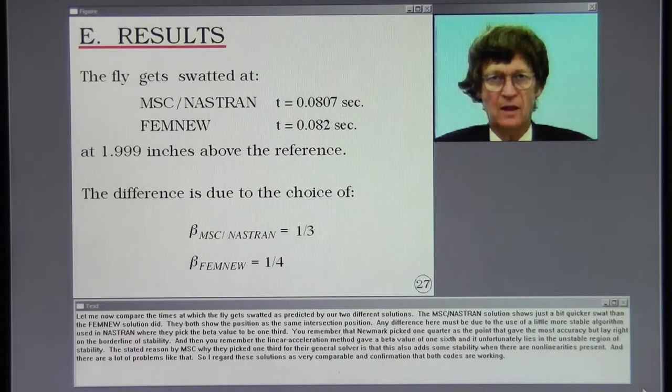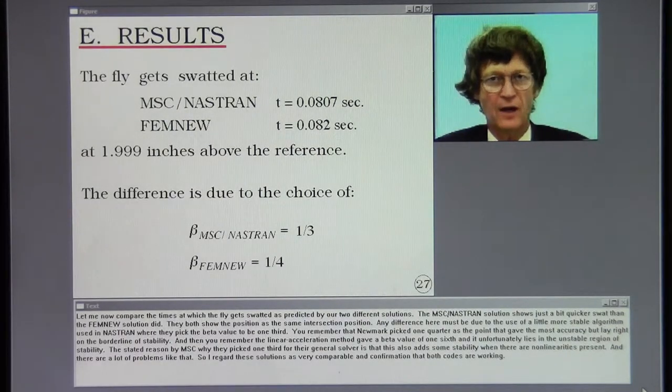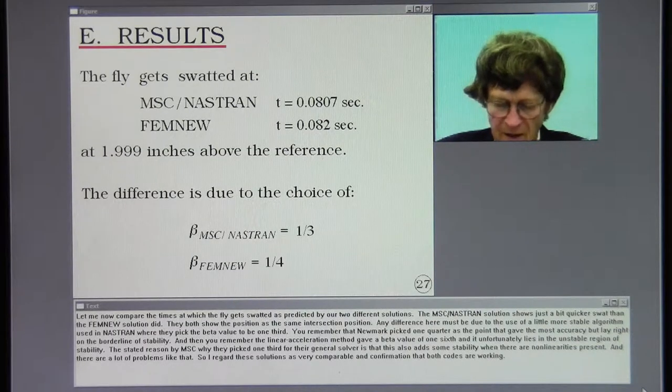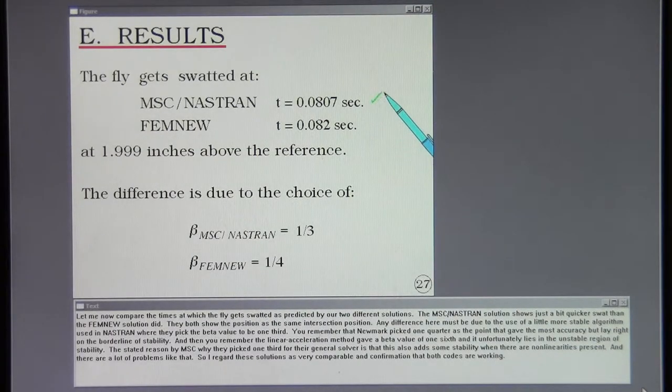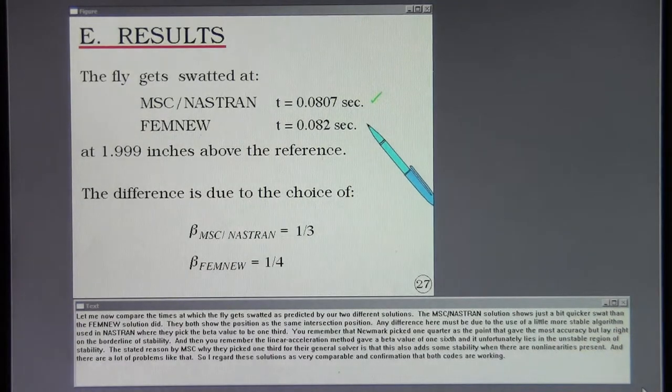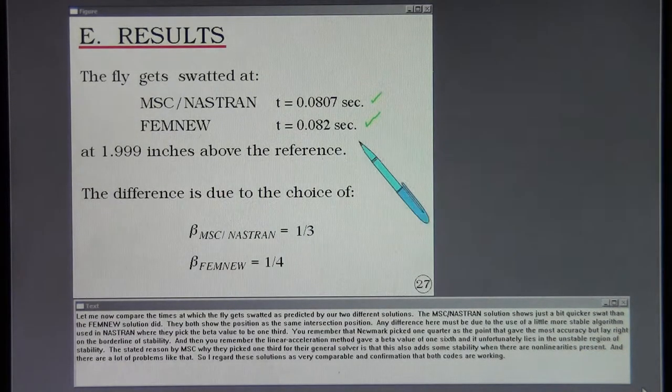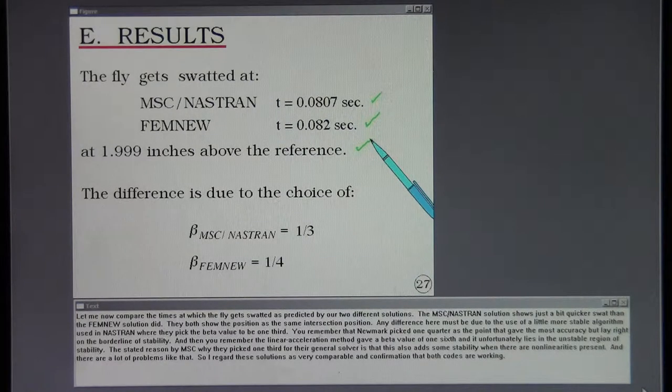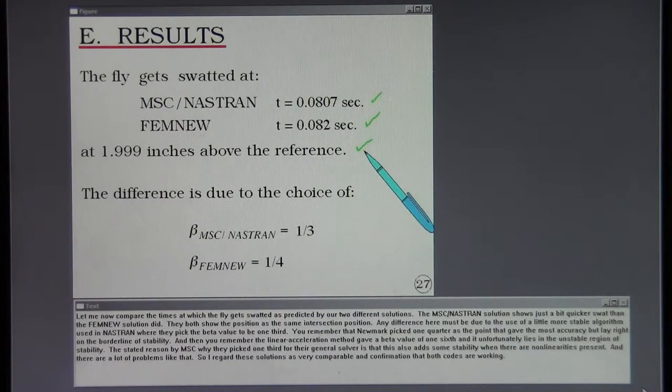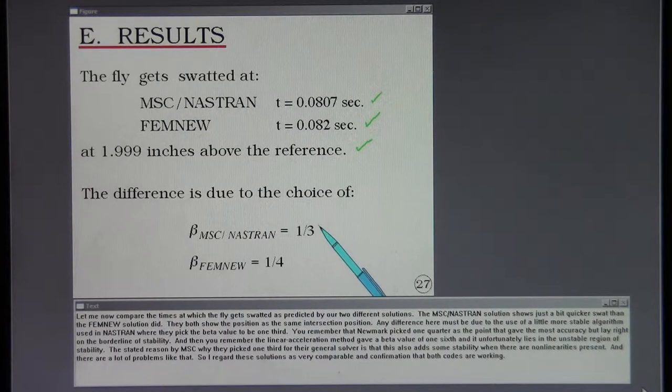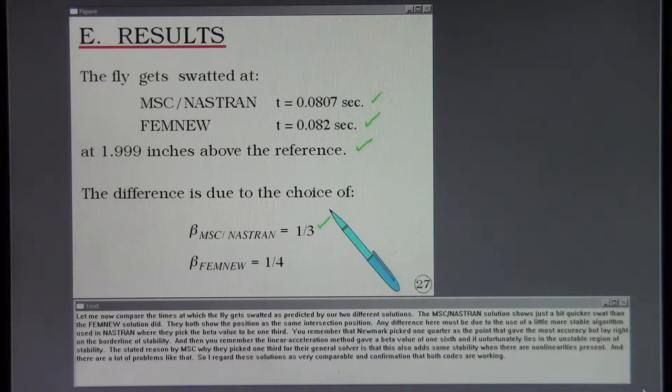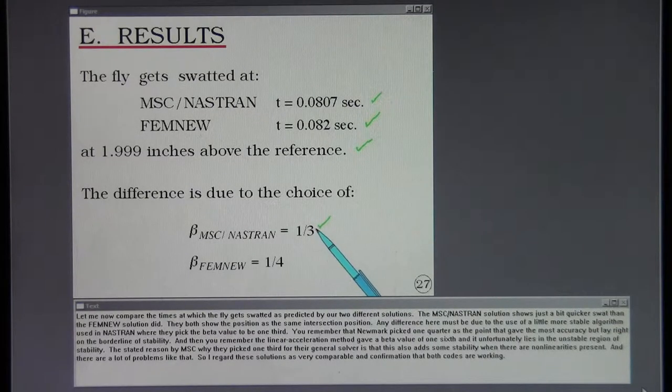Let me now compare the times at which the fly gets swatted as predicted by our two different solutions. The MSC Nastran solution shows just a bit quicker swat than the FEMNU solution did. They both show the position as the same intersection position. Any difference here must be due to the use of a little more stable algorithm used in Nastran where they pick the beta value to be one-third.